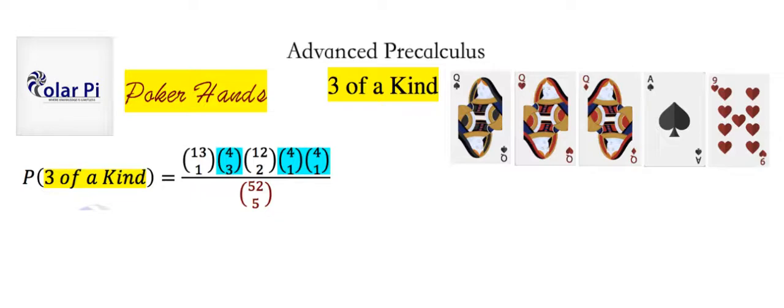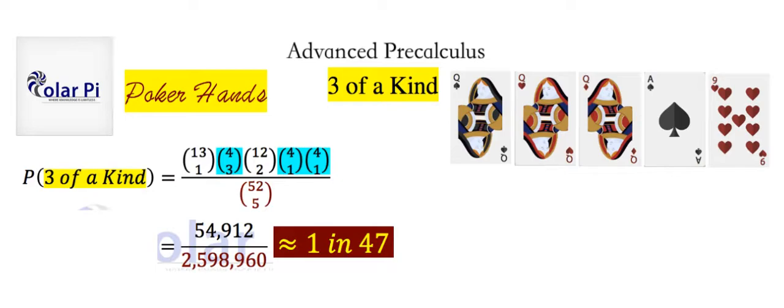So if we use our formula for n choose k and figure out what each of the things in the numerator are and we multiply them together we get this numerator in black. And the denominator, no surprise. And of course we want to get a sense of what this fraction is, so it's roughly 1 in 47.